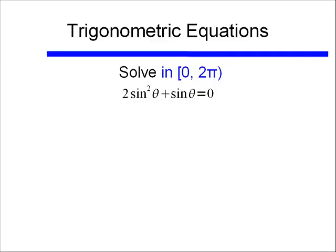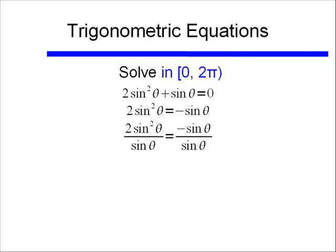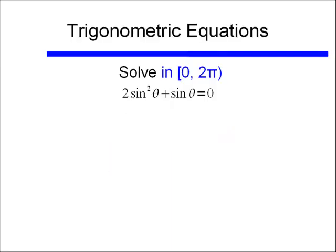So here I have 2 sine squared theta plus sine theta equals 0. Well I said I wanted to get this in terms of sine theta equals something, so what if I subtract sine theta from both sides? Well now I need to get rid of the sine theta from the right hand side, so then I can divide both sides by sine of theta. Hmm, something about this bothers me. The problem is, if sine theta is equal to 0, I can't do this. You're not allowed to divide any number by 0. So I could be getting rid of a whole solution because I know there are points where sine theta is equal to 0. So I better not go about this this way.